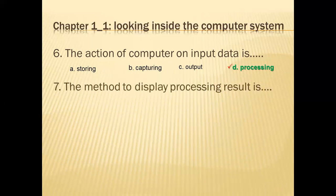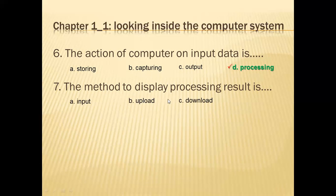The method to display the processing result: when computer data is inputted, computer processing starts, and there will be a result. The method to display the processing result is output. When processing is final and has a result, the user display of the result is the output.